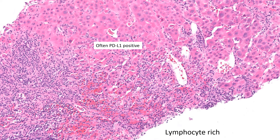For the most part, none of the patterns we've discussed have any predictive information — they do not guide therapy. Perhaps the one pattern that has an impact on therapy is the lymphocyte-rich pattern, because these tumors more often are positive for PD-L1. It is clear that lymphocyte-rich HCCs tend to be more positive for PD-L1, and anti-PD-L1 therapy has been approved as a second-line therapy for hepatocellular carcinomas.